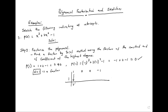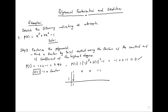Drop the first number down. Multiply it by this one, put the result here and add. Multiply that result by this number and add again, until you get a zero remainder if it is indeed a factor. So we have: 1 times 1 gives 1, we add 2 plus 1 to get 3.